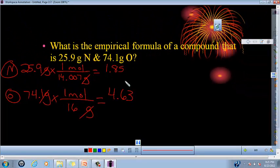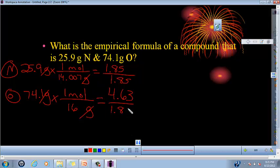The next step was look at your numbers. Which one's the smallest? This one's the smallest. So now you're going to divide both of these numbers by the smallest number. So you get 1 up here, and then down here you get 2.5.